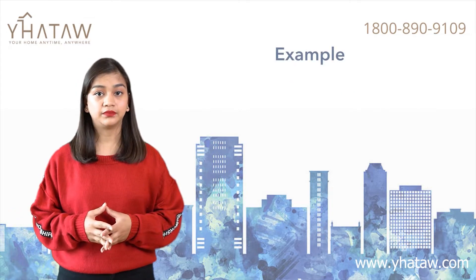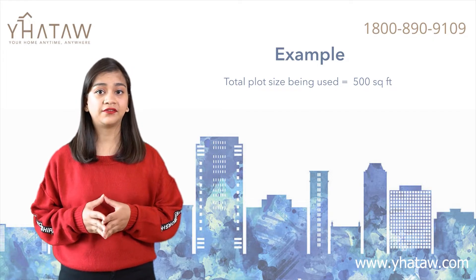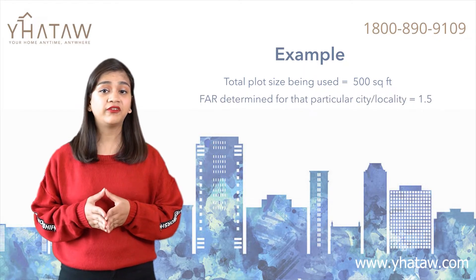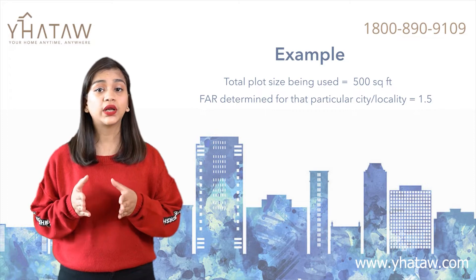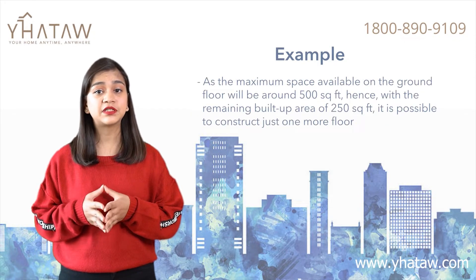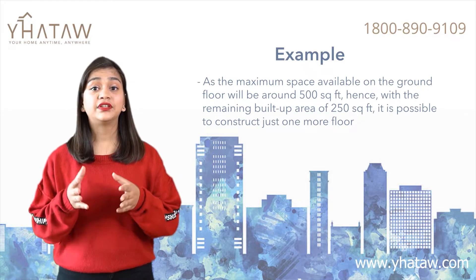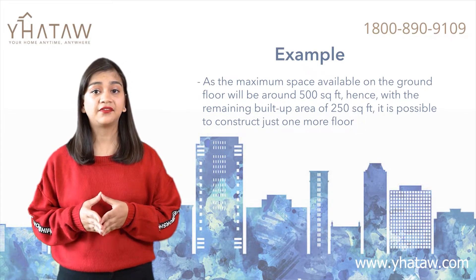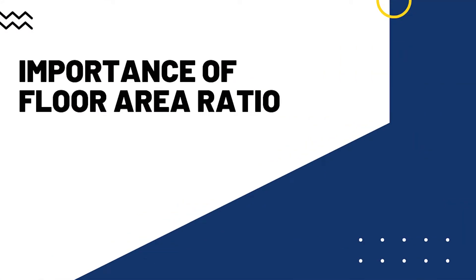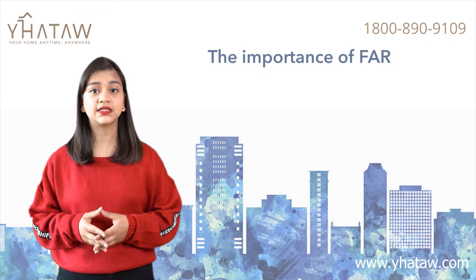You may determine the ratio by dividing the total area of the building by the gross area of the lot. For example, if the size of the plot is 500 square feet and the FAR for that city or locality is 1.5, then the total floor area that can be constructed is 750 square feet. Since the maximum space on the ground floor is 500 square feet, the remaining 250 square feet allows for just one more floor.